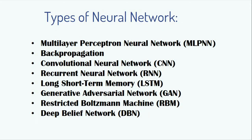The different types of neural networks are multilayer perceptron neural network, back propagation neural network, convolutional neural network, recurrent neural network, long short-term memory, generative adversarial network, restricted Boltzmann machine, and deep belief network. Among these, the most highly used are back propagation, convolutional, recurrent neural network, long short-term memory, GAN, and RBM.